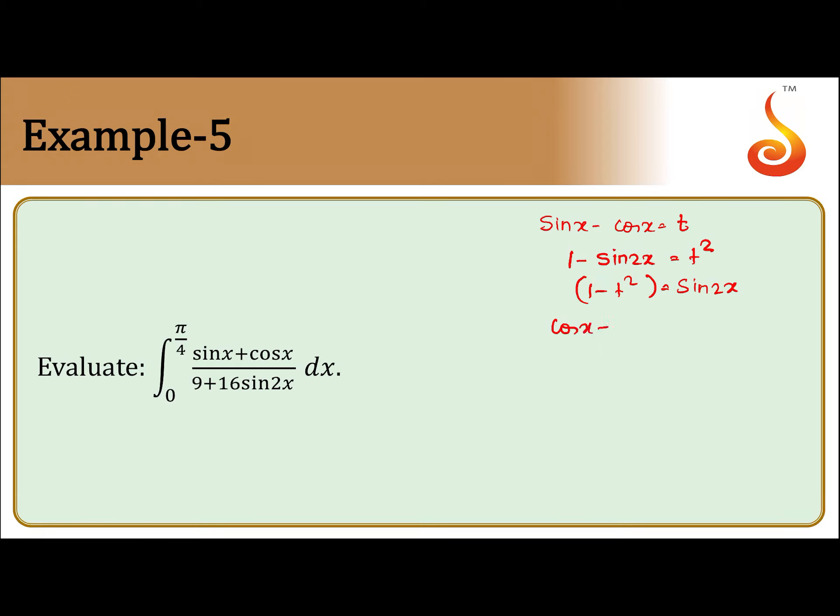So we get cos x plus sin x dx equals dt. We arrange the derivative which is there in the numerator. Now if you put the limits: sin π/4 minus cos π/4 equals t₁, sin 0 minus cos 0 equals t₂.